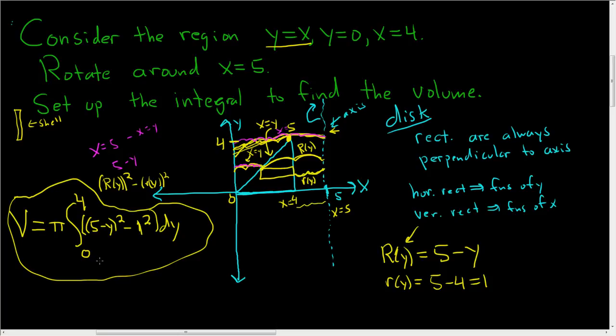The hard part is setting it up. So just keep in mind, with shell, your rectangles are always parallel to the axis. So it would have looked like this if we would have drawn it. With disk, your rectangles are always perpendicular. I hope this helps.